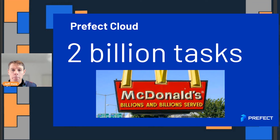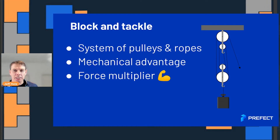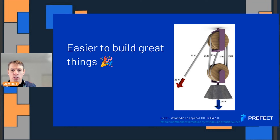We have recently passed over 10,000 GitHub stars, and Prefect Cloud has now run over 2 billion tasks — a pretty huge number of uses. The block and tackle system, not something you see every day, included a system of pulleys and ropes that gave you a mechanical advantage — a force multiplier. If you use 25 newtons of force, you actually get the benefit of 100 newtons because you're using this pulley system. Similarly, Prefect blocks make it easier to build great things. It's a force multiplier.